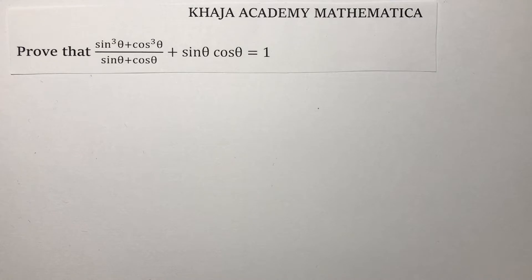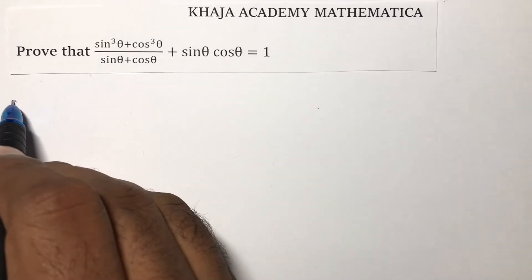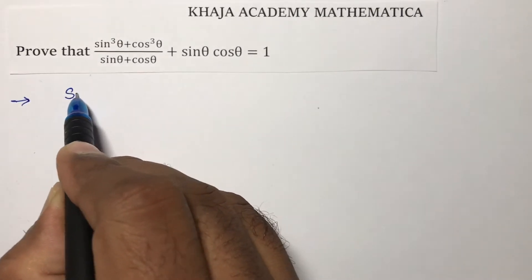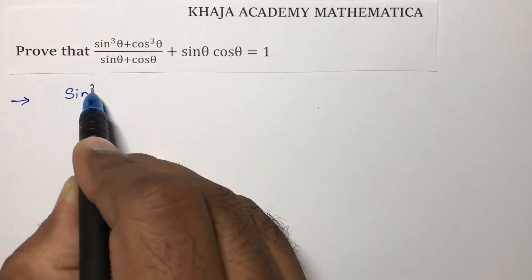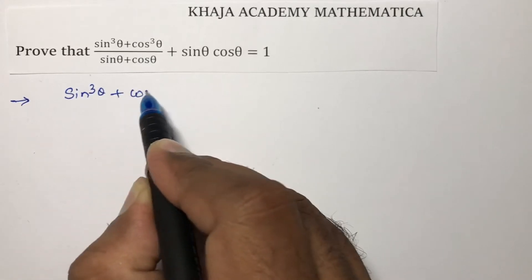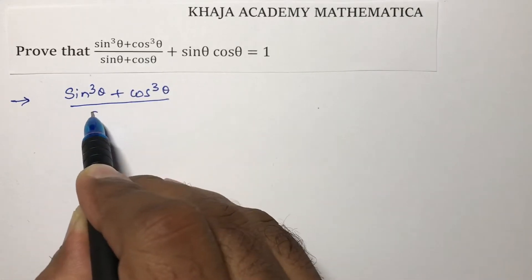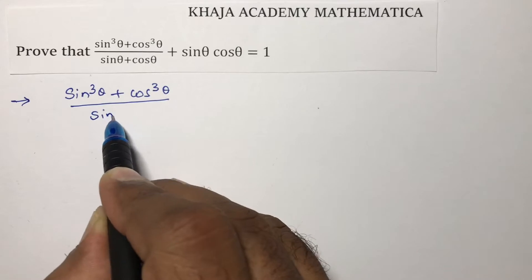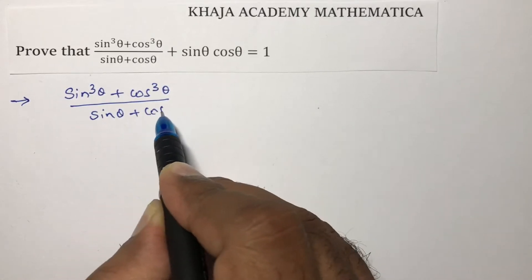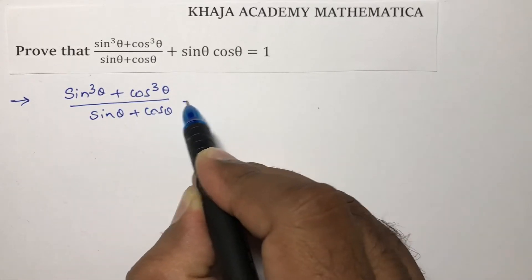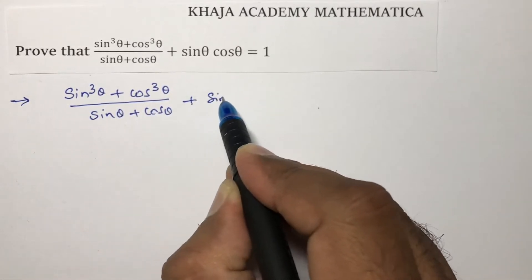Prove that sin³θ + cos³θ divided by sinθ + cosθ equals 1. So here, sin³θ + cos³θ by sinθ + cosθ plus sinθ cosθ.